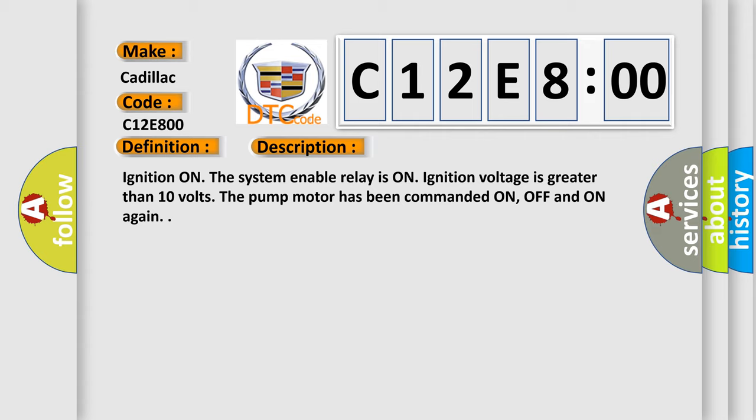Ignition on, the system enable relay is on, ignition voltage is greater than 10 volts. The EBCM detects the pump motor has been commanded on, off, and on again.